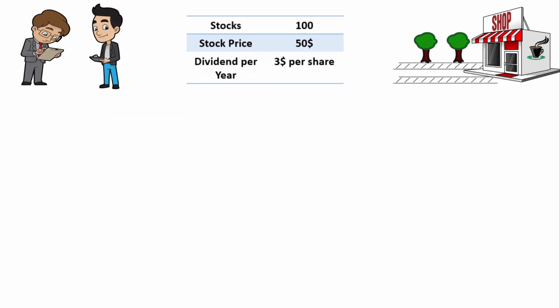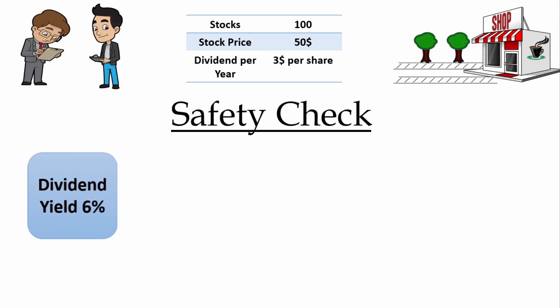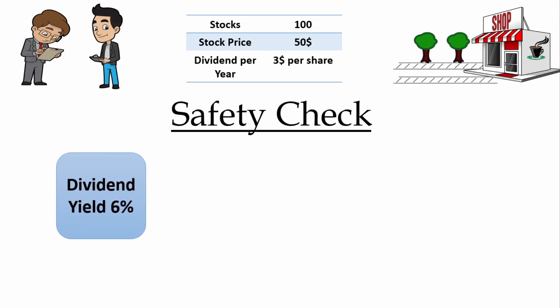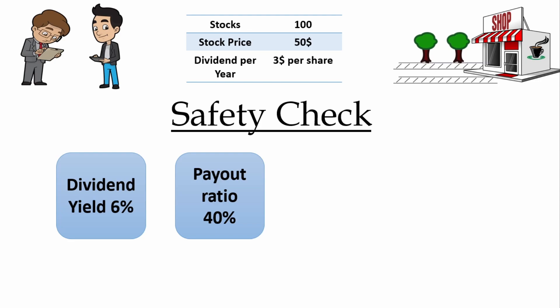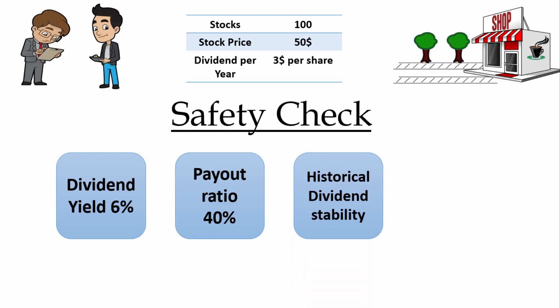Well, first let's run a safety check for Joe's dividend. We can see the dividend yield is 6%, which is very good. The payout ratio is 40%, meaning that Joe pays his dividends and still has enough money to grow his business — that's good. I also checked Joe's balance sheet to make sure that he is paying his dividend from the cash flow and not by taking on debt. This is also checked.